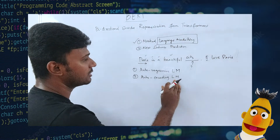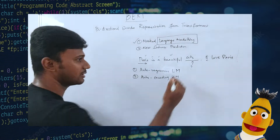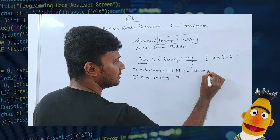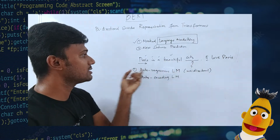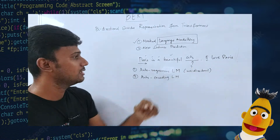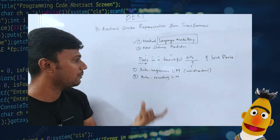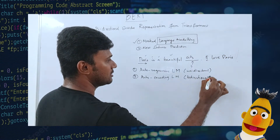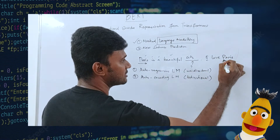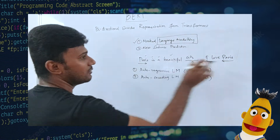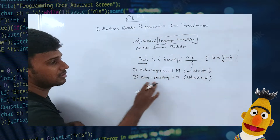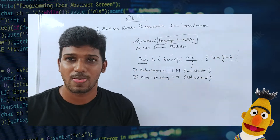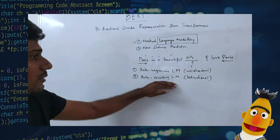Auto-encoding language modeling is bidirectional. Auto-regressive is unidirectional — it can either read the sentence in the forward direction or the backward direction. But auto-encoding language modeling is bidirectional, so it is capable of reading the sentence in both directions. Because of this, auto-encoding language modeling is able to give better results. And BERT is basically an auto-encoding language model.